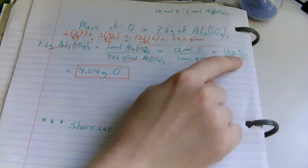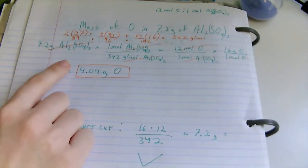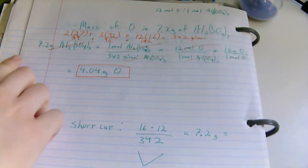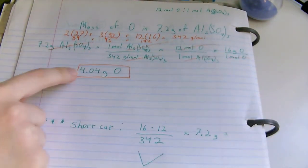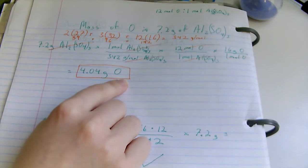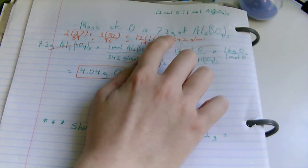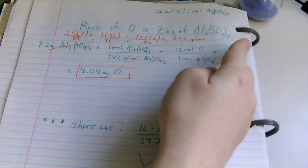Now we multiply how many grams there are of oxygen per 1 mole of oxygen, which is 16. Multiplying across, you'll be left with 4.04 grams oxygen as the mass if there were only 7.2 grams of aluminum sulfate.